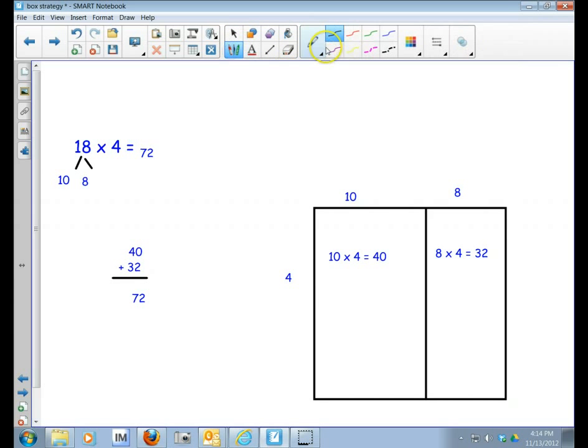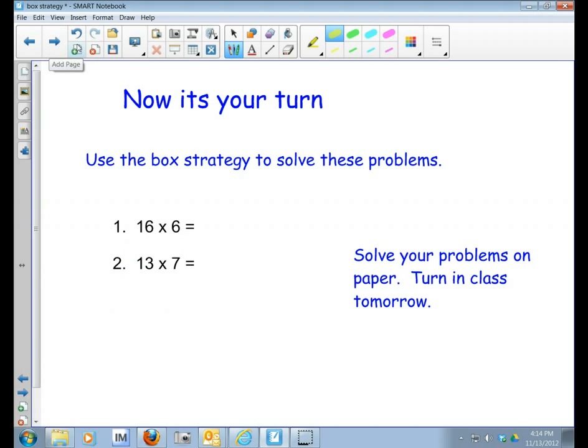Alright, so I've added this answer plus this answer. And that's how I got my 72 right there. Alright, now it's your turn. I want you to use the box strategy to solve these problems. Use a piece of paper and you're going to turn it in class tomorrow. And draw out the box and go ahead and solve the problem. Good luck!